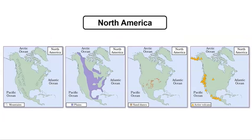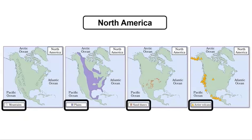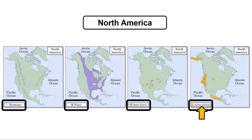You might be wondering, why do we need four maps? Well, each map shows the locations of one kind of landform that we observe in the national parks. Do you notice the map key at the bottom of each map? The symbol shows the kind of landform represented on the map. This map shows mountains. This map shows plains. This map shows sand dunes. And the last map shows active volcanoes.